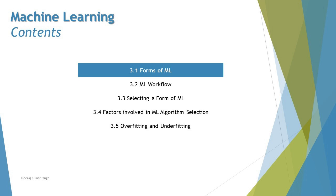We'll also cover what's the workflow for machine learning, selecting a form of ML, factors involved in ML algorithm selection, and overfitting and underfitting of an ML. So this chapter gives a high-level outset of what machine learning is all about, with a deeper dive in upcoming chapters. We'll get started with section 3.1 — forms of machine learning.